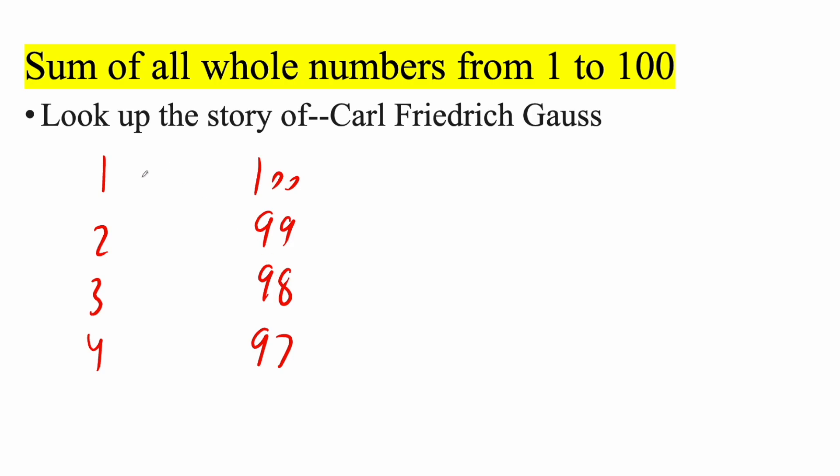Now we can see if there's something special. 1 plus 100 gives you 101. 2 plus 99 is also 101. 3 plus 98 is also 101. And 4 plus 97 is also 101. Now we need to think, how many numbers are there from 1 to 100? You might know right away it's 100, but maybe you might think, maybe it's 99 or maybe it's 101.